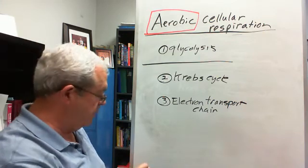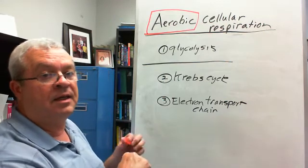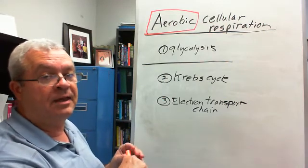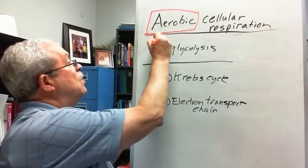So what did we learn about these? We learned where they occur. Glycolysis - the reactions of glycolysis occur where in a cell? In the cytosol.